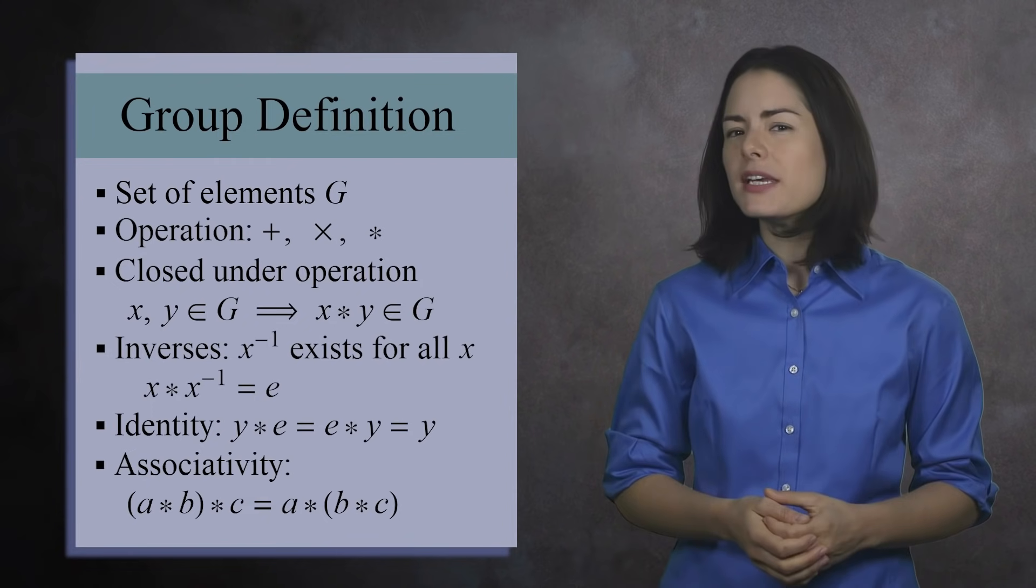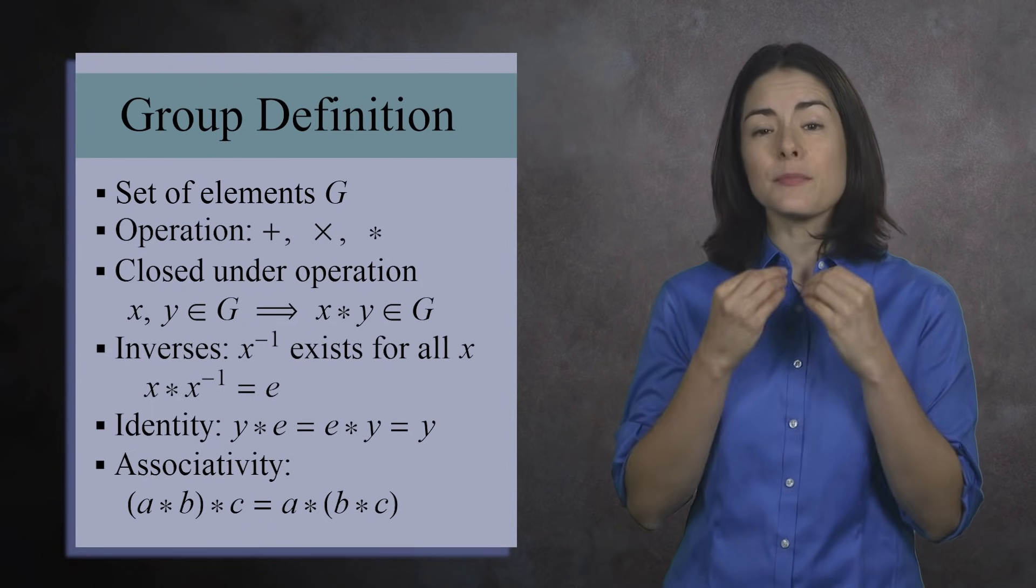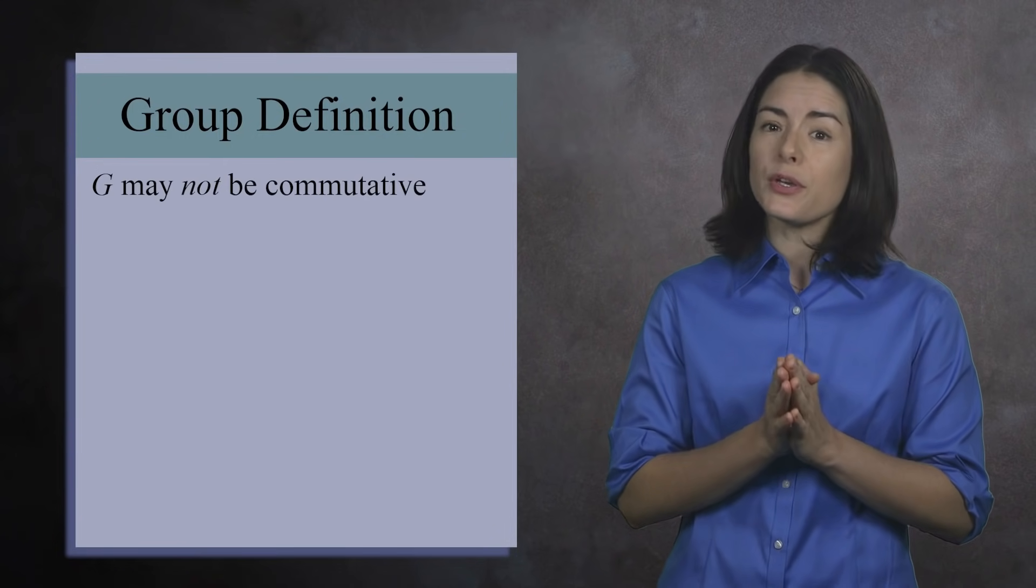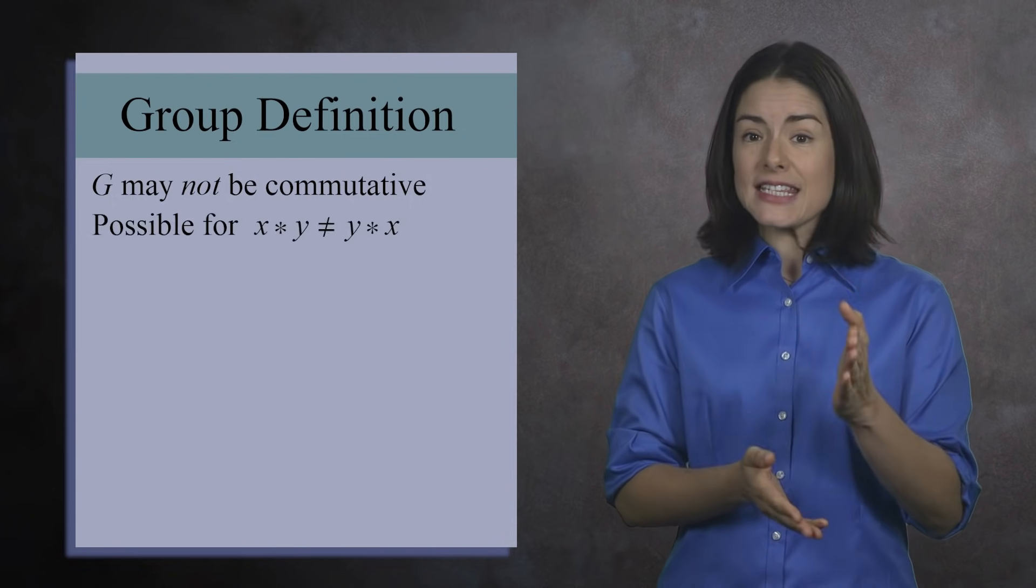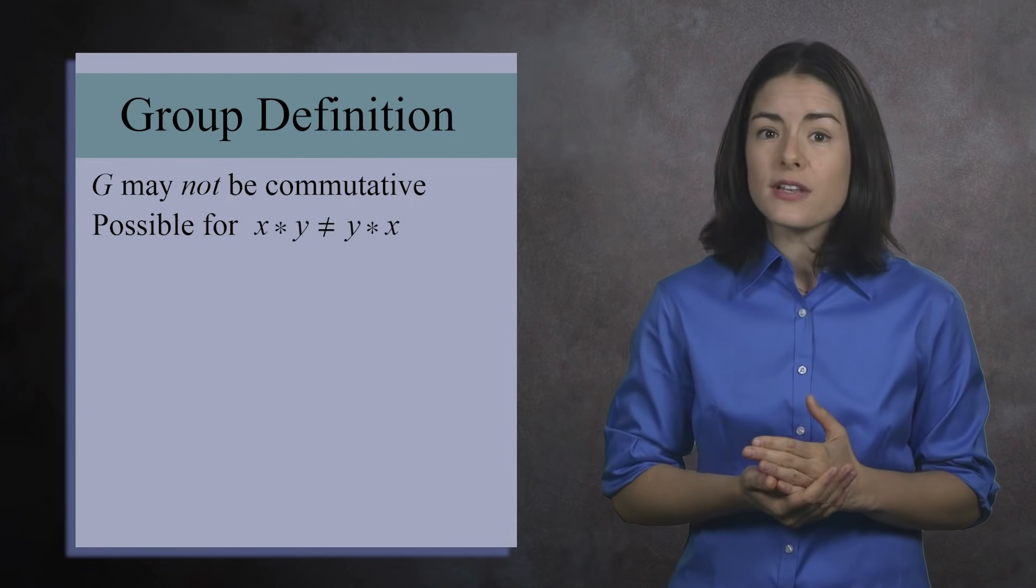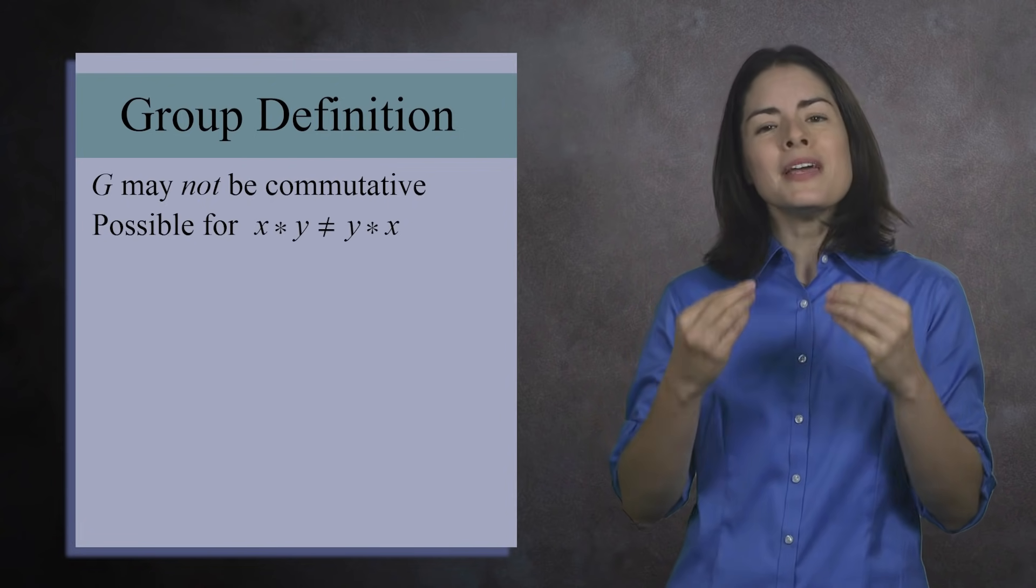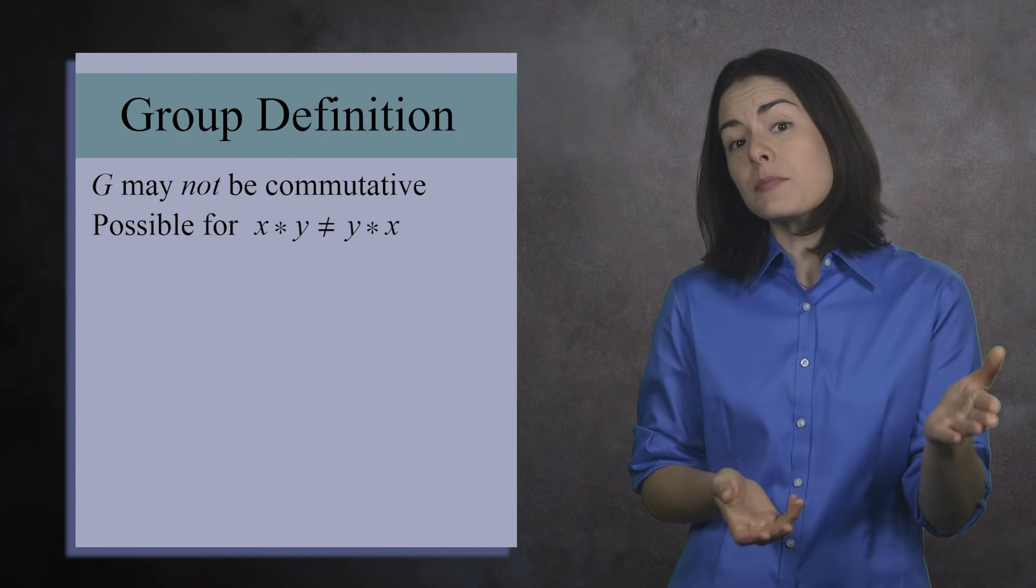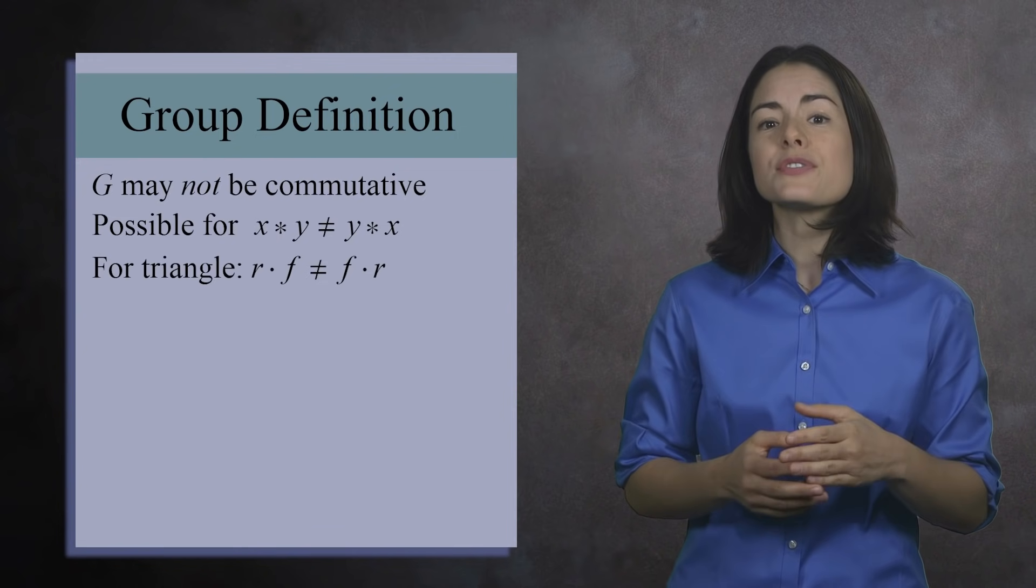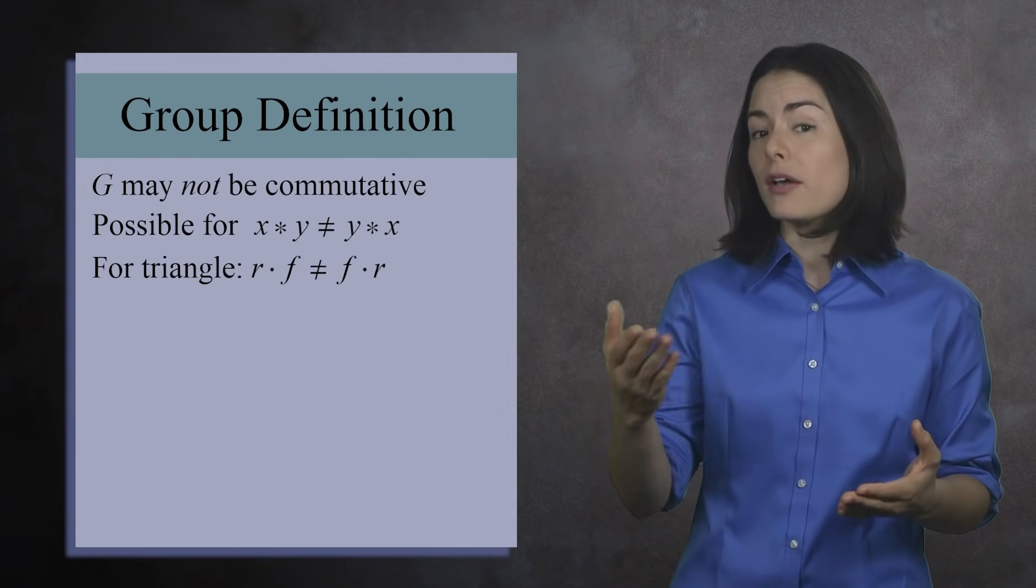It took mathematicians many years of work to identify these as the most essential properties. For example, notice that groups are not required to be commutative. That is, x times y may not equal y times x. This rule was not included because it would exclude many important examples like the group of symmetries. With the triangle, for example, a flip followed by a rotation gives you something different than a rotation followed by a flip.